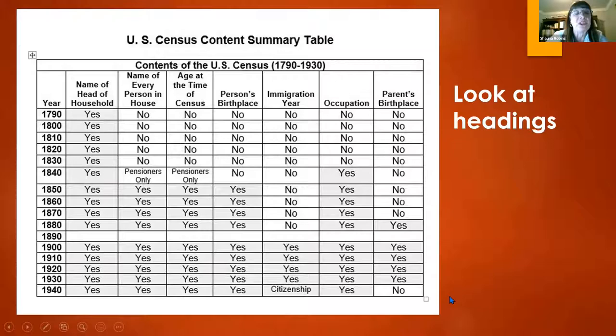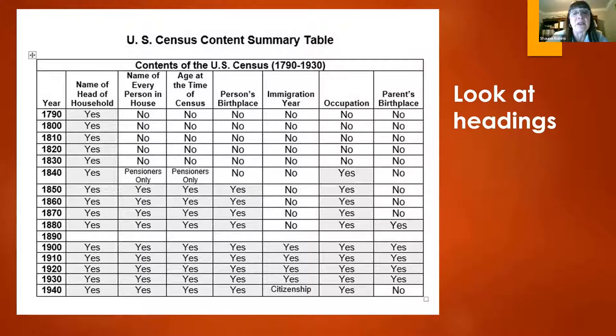This is one of the sheets you got last week. If you didn't get it, it's in the chat — you can download it tonight. On the left you see the census years for the U.S. federal census, and across the top are the headings of things found in those particular censuses. For example, if you're looking for immigration information, it doesn't do you any good to look before 1900 — they didn't keep track of it. If you're looking for occupation, don't look in the 1820 census. You can save a lot of time if you know where and what years to look.